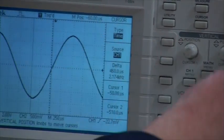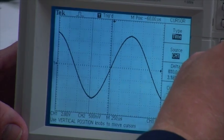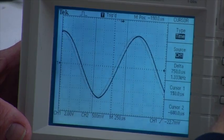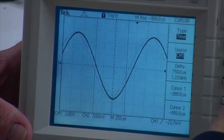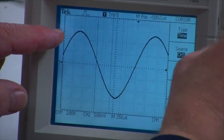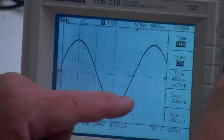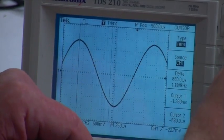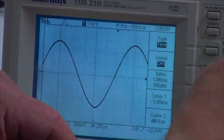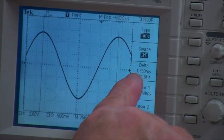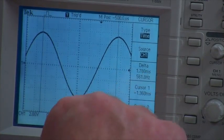If I change to time, it makes the cursors vertical. I'll put one of the cursors on this peak right here, and the other cursor on this peak over here.